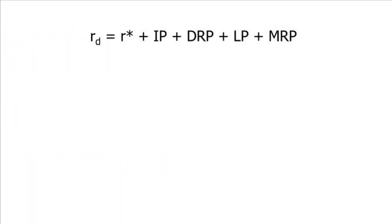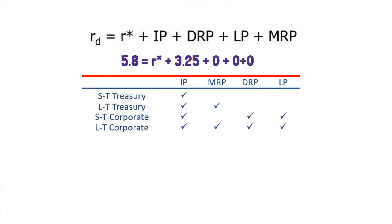To solve this question, let us bring back the quoted interest rate equation. If we plug in the given numbers, we find 5.8 equals R star plus 3.25 plus 0 plus 0 plus 0. Notice that even if values for LP, MRP, and DRP are given, you set these values to 0. The reason is we are dealing with 30-day Treasury bills, which is a short-term government security. Short-term government securities have no LP, MRP, or DRP. The only thing short-term government securities are affected by is inflation. After you solve the equation, we get R star equals 2.55%, which is the real risk-free rate.